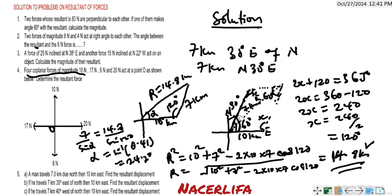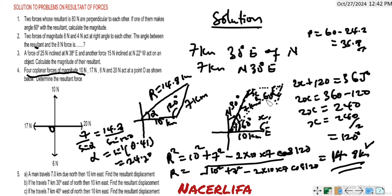To find the small angle P between the resultant and the north-east direction: P = 60 minus 24.2 = 35.8 degrees. To find the full direction, we add this to the original 30 degrees: 30 + 35.8 = 65.8 degrees. So the direction is north 65.8 degrees east.